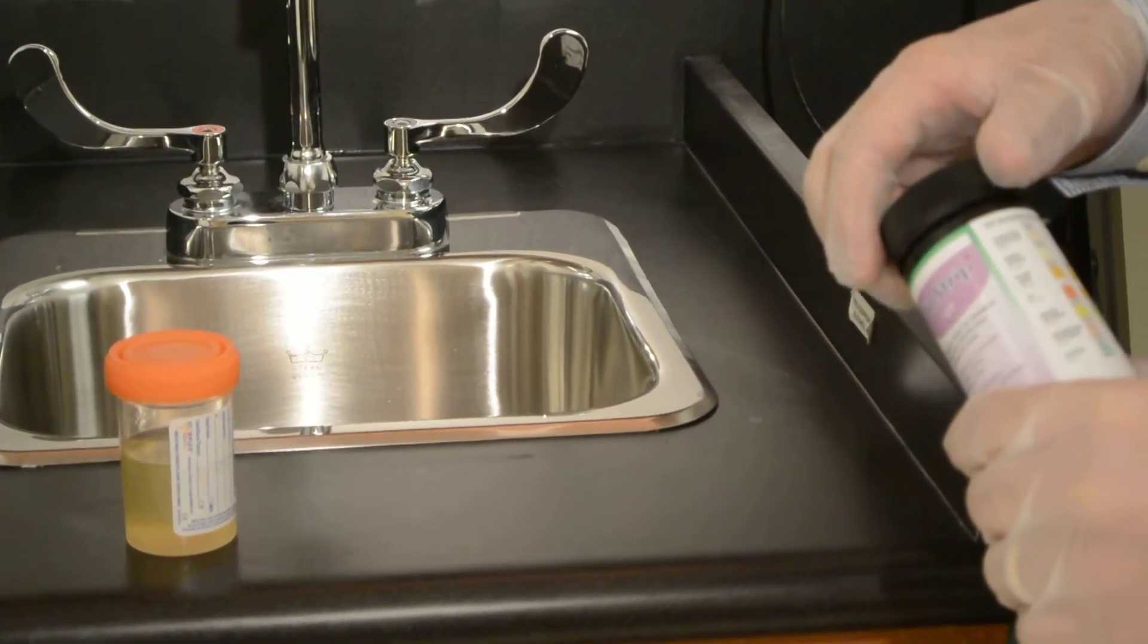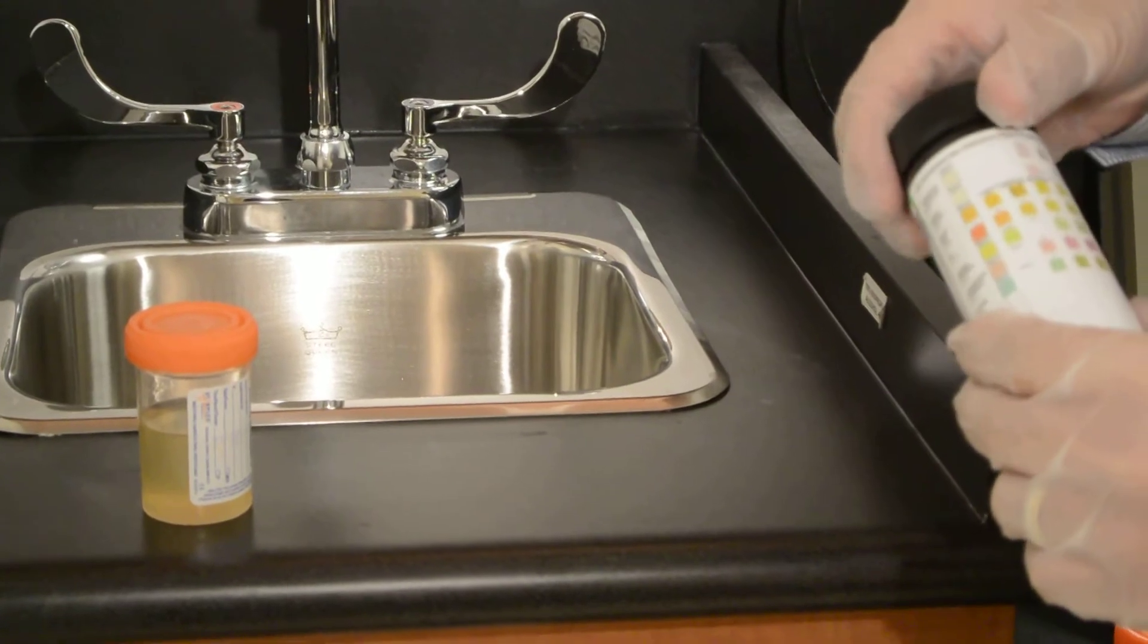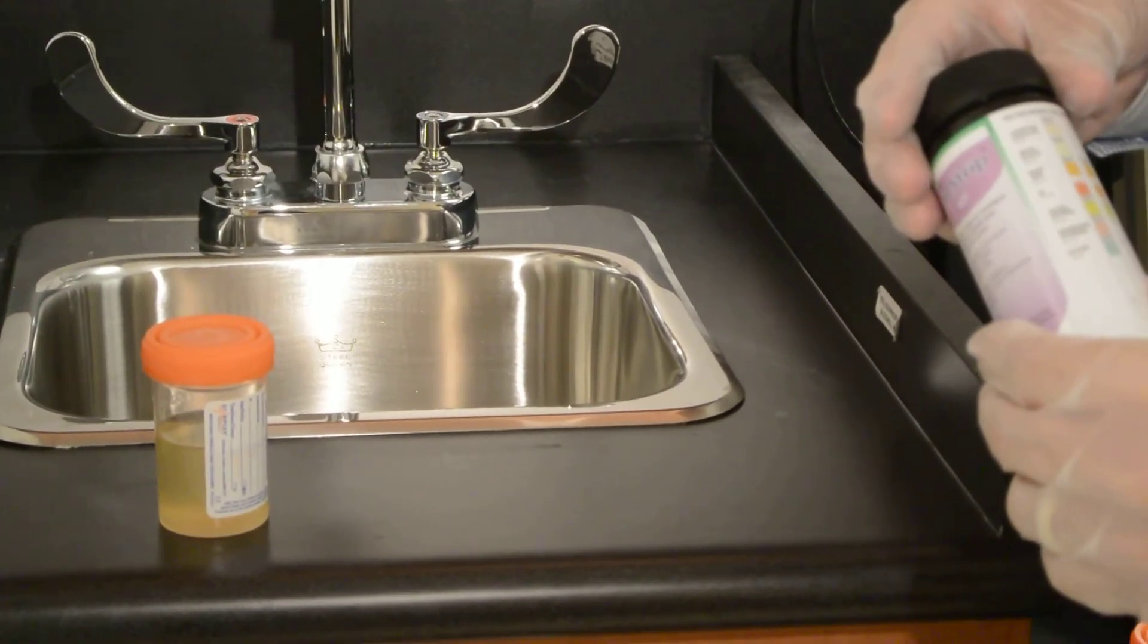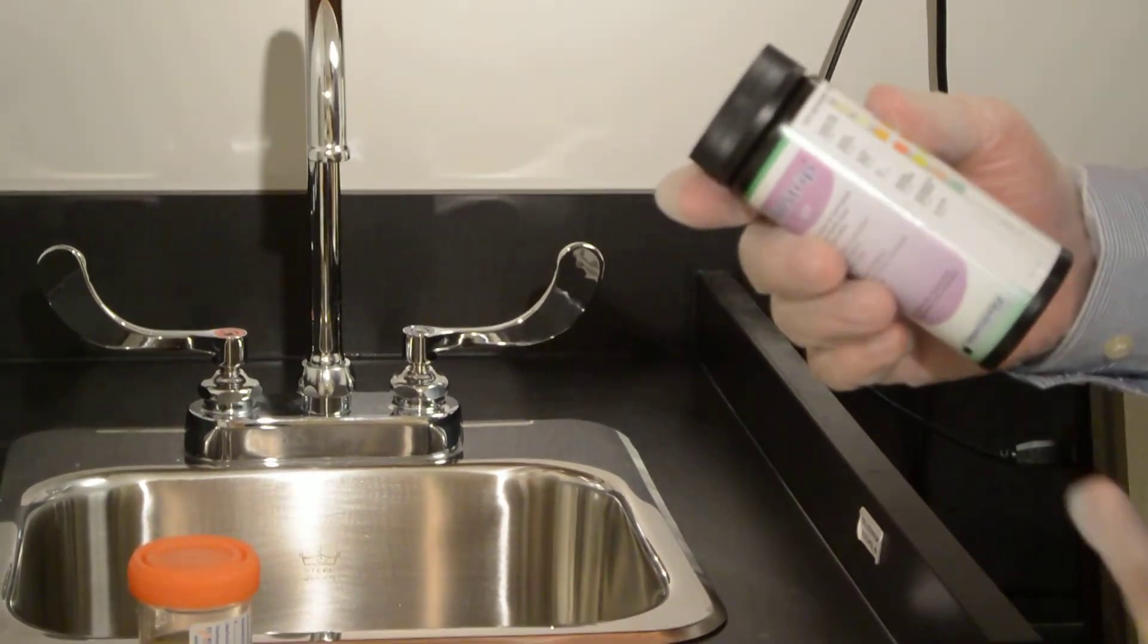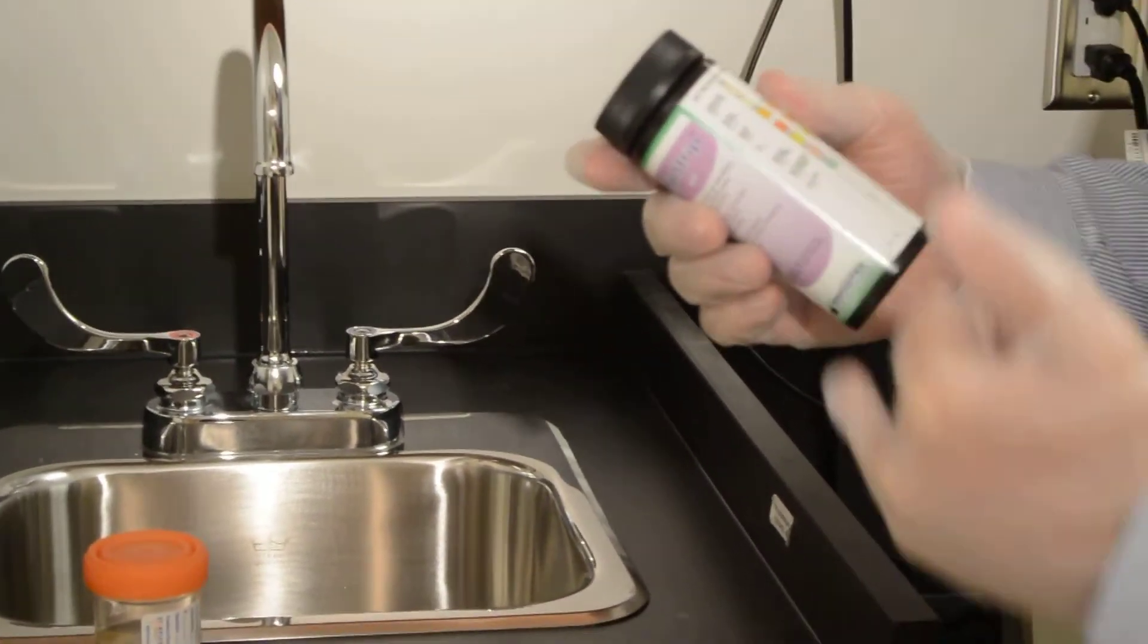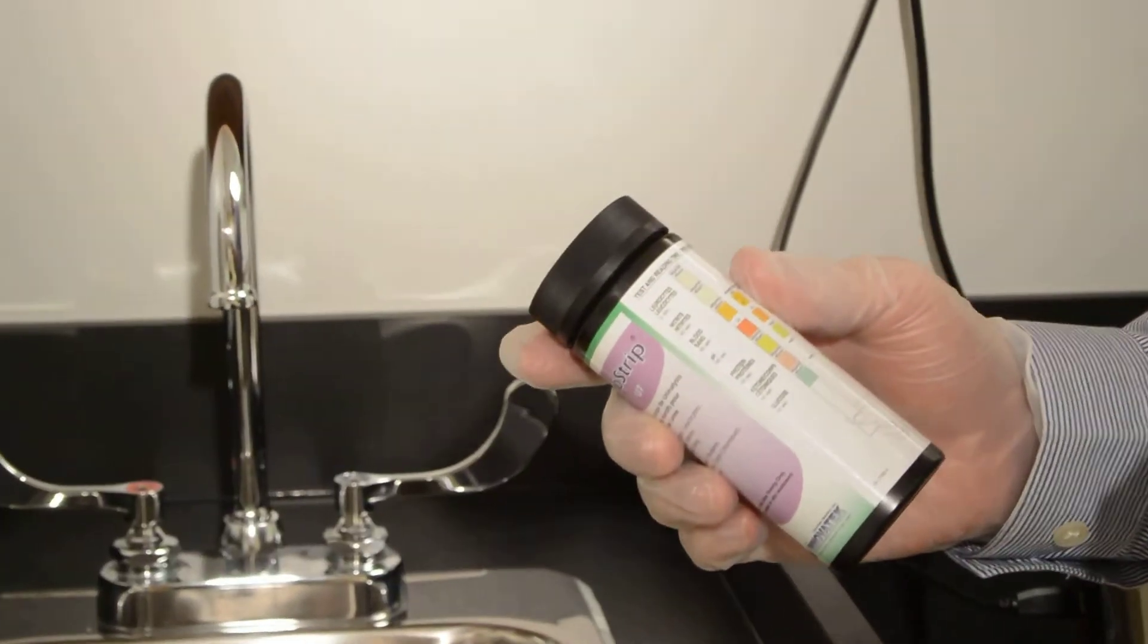In this presentation, we'll learn how to do a urinalysis test, testing the urine for different compounds: leukocytes, nitrites, blood, pH, proteins, ketones, and glucose.